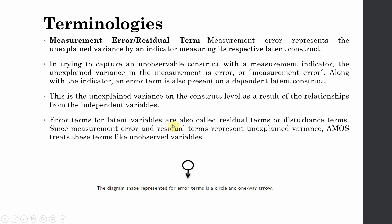Error terms for latent variables are also called residual terms or disturbance terms. Since measurement error and residual terms represent unexplained variance, AMOS treats these terms like unobserved variables. Thus, the symbol for these error terms are a circle and one-way arrow like this.